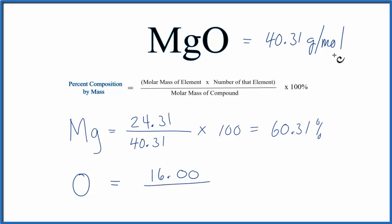And then we divide this by the molar mass, multiply by a hundred, and the percent composition of oxygen in MgO is 39.69%.